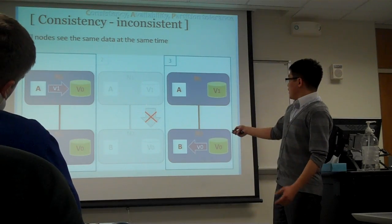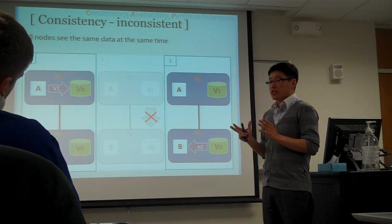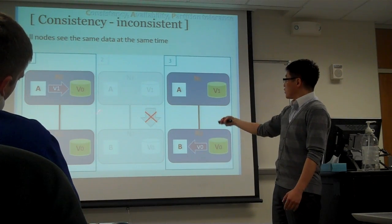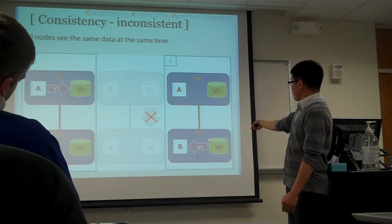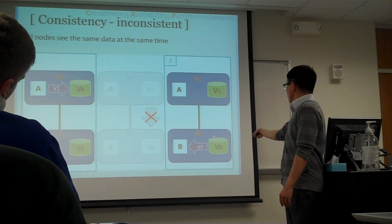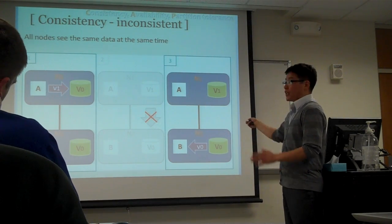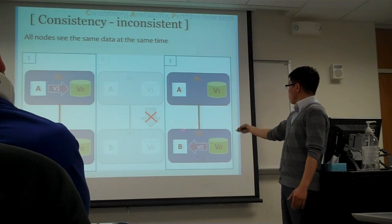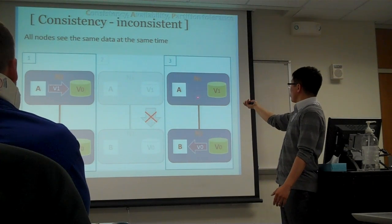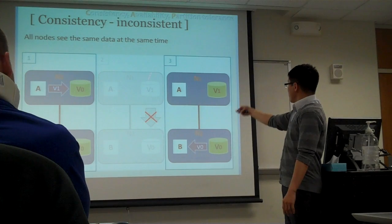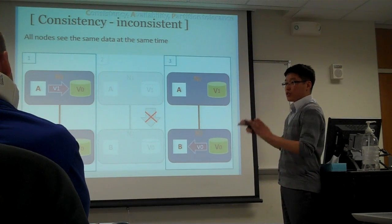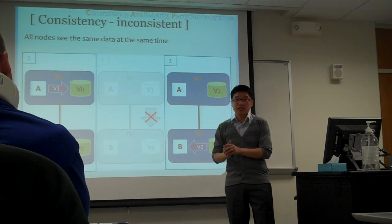Now how about the inconsistent case? Let's say a network partition happens for some reason, which means the update message is not delivered from node 1 to node 2. Then in the third step, when process B requests a read operation, because this node doesn't know the value was updated, B will read the V0 value, but A or node 1 will read V1. So both nodes see different data at the same time. I can say this system is not consistent.